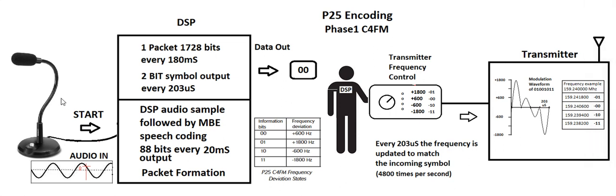To recap the transmit chain: microphone audio comes in, it's changed to zeros and ones, squeezed down to 88 bits of voice every 20 milliseconds, put into a packet, then sent out two bits at a time every 203 microseconds. The DSP chip forms a modulation waveform that mimics the digital input, which goes into the transmitter just like regular analog audio and gets frequency modulated out the transmit. Now let's look at the far end — the receiver — and do the process in reverse.